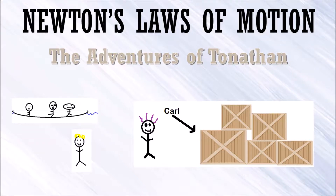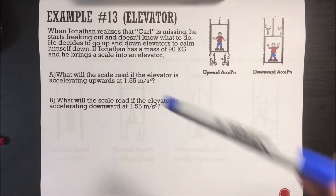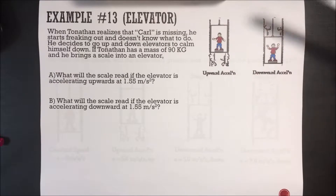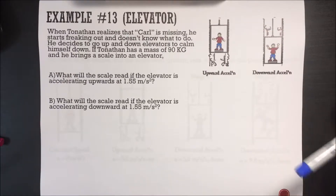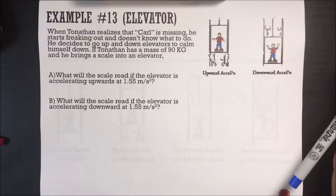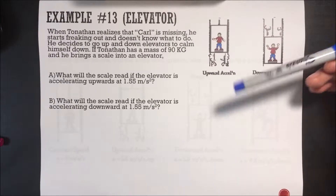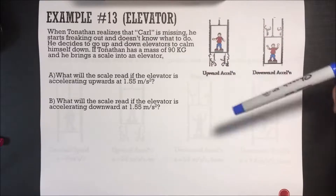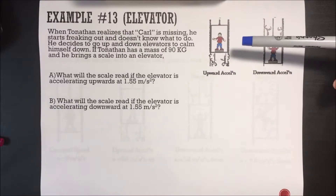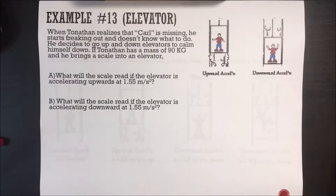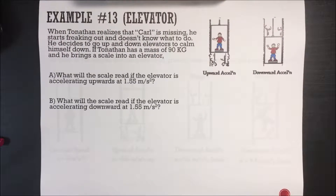Welcome back to Newton's Laws of Motion: The Adventures of Toniton. This time we'll be doing problems involving elevators. When Toniton realizes that Carl is missing, he starts freaking out and decides to go up and down elevators to calm himself down. If Toniton has a mass of 90 kg and he brings a scale into an elevator, what will the scale read if the elevator accelerates upward at 1.55 meters per second squared?